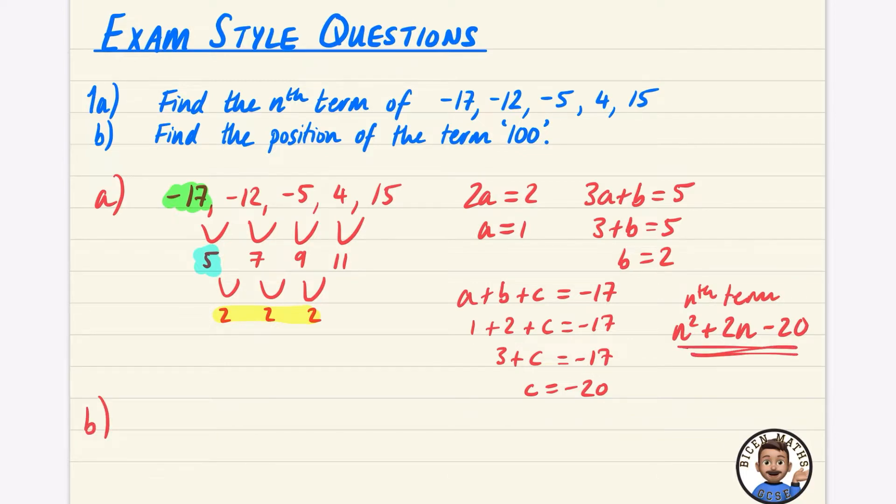Okay, here comes the part that's a little bit different. It says find the position of the term 100. So the position is n. It's saying what is n equal to? So I want the sequence n squared plus 2n minus 20. I want to find out when it is equal to 100.